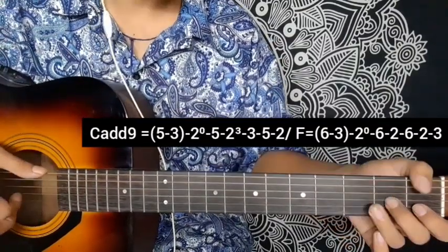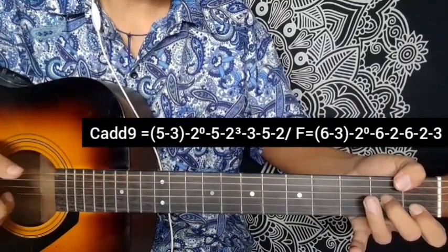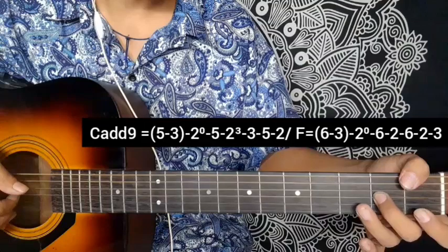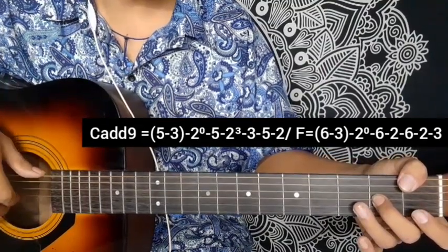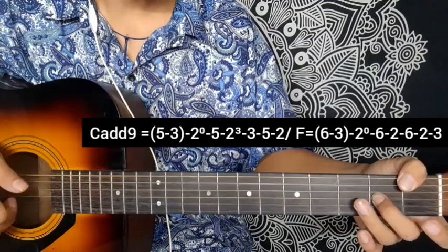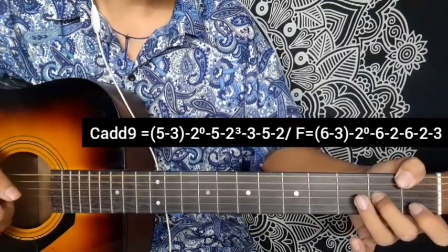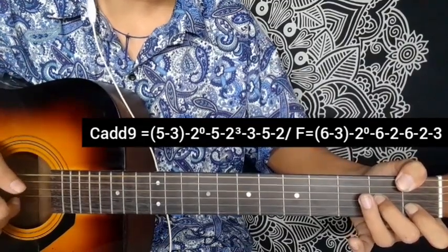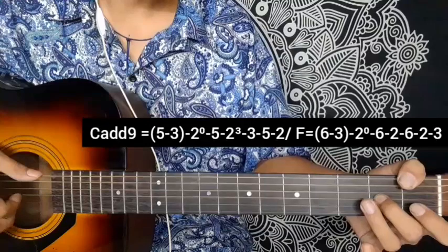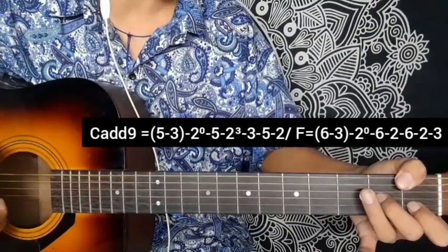Let me show the pattern: first fret, second fret, third string, pick second string open. The sixth, then second string first, press correctly. The pattern is 6-2-3. This is from the F chord. 2-3, that's the starting.